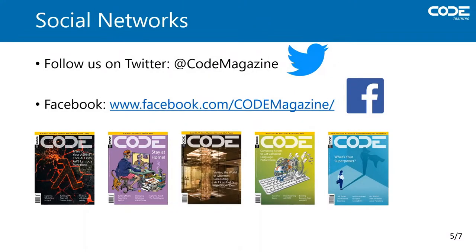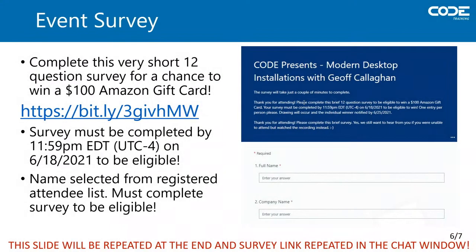If you like what you see today or have seen in our prior webinars, please subscribe to our YouTube channel, follow us on Twitter, and like us on Facebook. We would like your feedback about this webinar in the form of a quick survey, and we're willing to give $100 in the form of an Amazon eCard to one lucky attendee. A name will be drawn from the entire webinar's registered attendee list, and a completed survey is required to qualify. The survey is very short and you'll finish it in no time. The survey link is on the slide and we'll post it in the chat window as well.